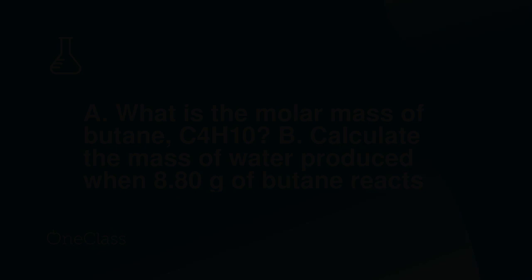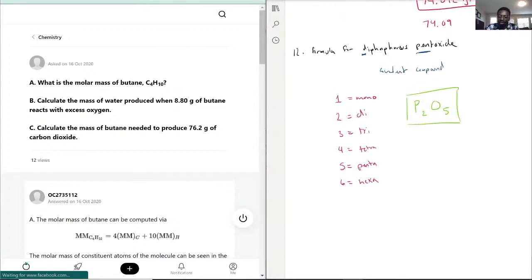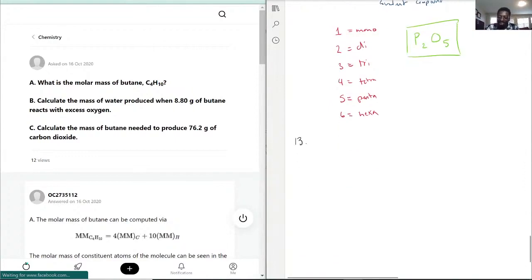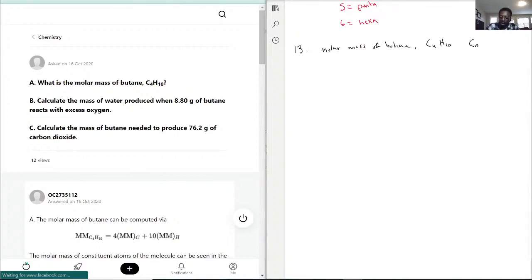Okay so sorry about the phone in the background, you can just ignore that. Someone will pick it up or just hang up. Point being is that for question 13 we want to do several parts. They're asking for the molar mass of butane, which they give to us as C4H10, which follows a formula of CnH2n plus 2.